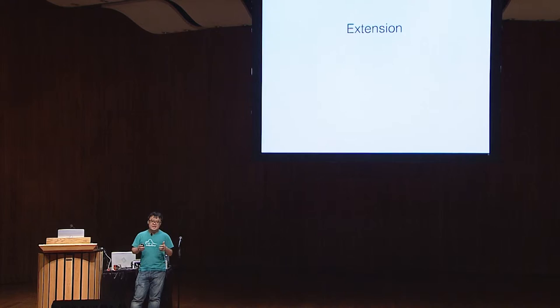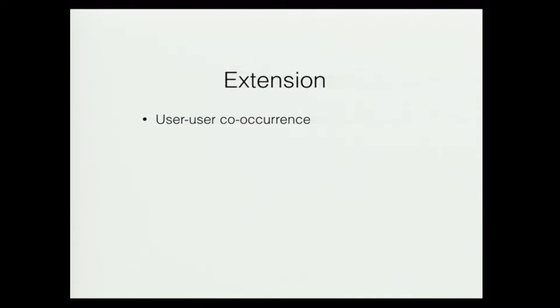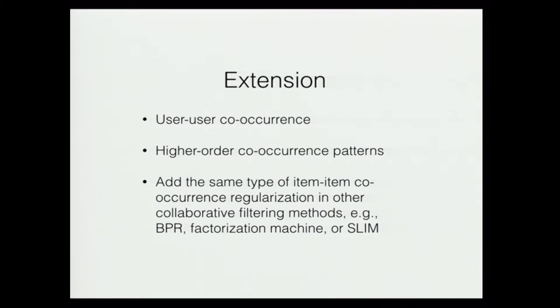I'd like to point out a few direct extensions. First, now that we find adding item co-occurrence patterns helps, what about adding user co-occurrence patterns? We would be excited to find out. Another interesting direction is to look at higher-order co-occurrence patterns. Finally, this regularization is straightforward to add to other collaborative filtering models — for example, adding a similar term to Bayesian personalized ranking, factorization machines, SLIM, and many other models. It's actually very simple.